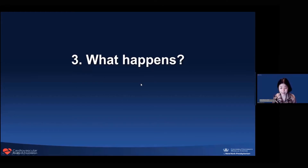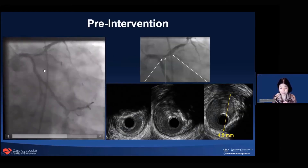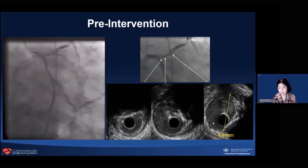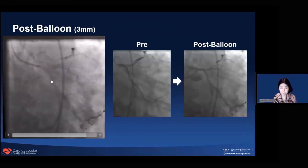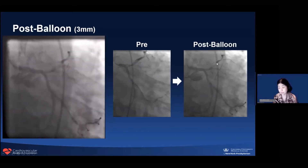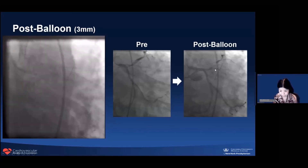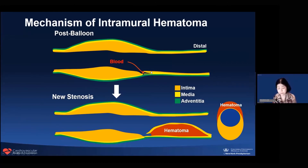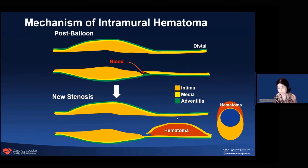I want to show one instructive case. This is a very severe lesion. IVUS shows a reference vessel diameter of 4.5mm. The operator performed pre-dilation using a relatively small balloon compared to the reference size. After balloon dilation, one portion looked like a new stenosis. What happened? This is a so-called intramural hematoma. Once the segment was ballooned, at the edge there was a medial dissection. Because the adjacent segment was relatively normal, it extended distally very easily, creating a closed space without an entry site—and blood accumulated there, forming a hematoma that pushed into the lumen.